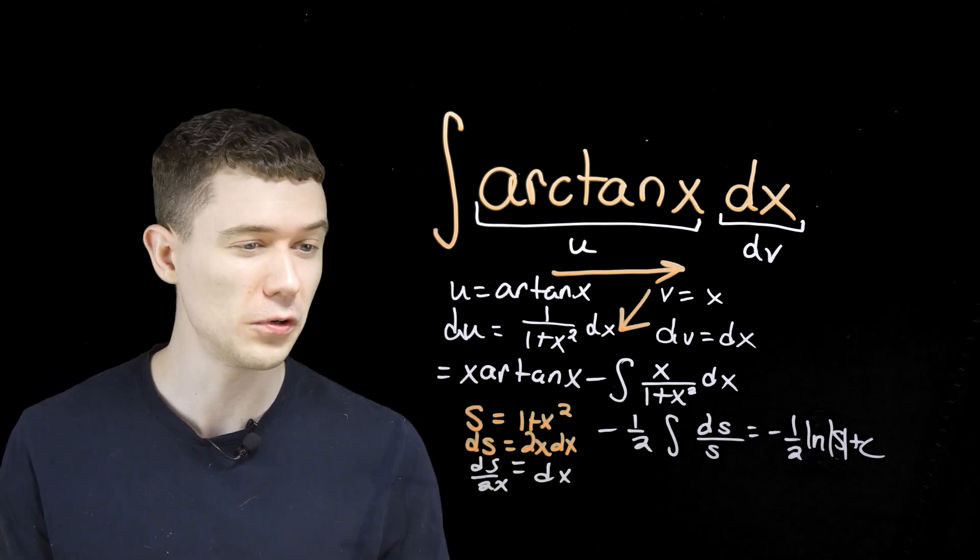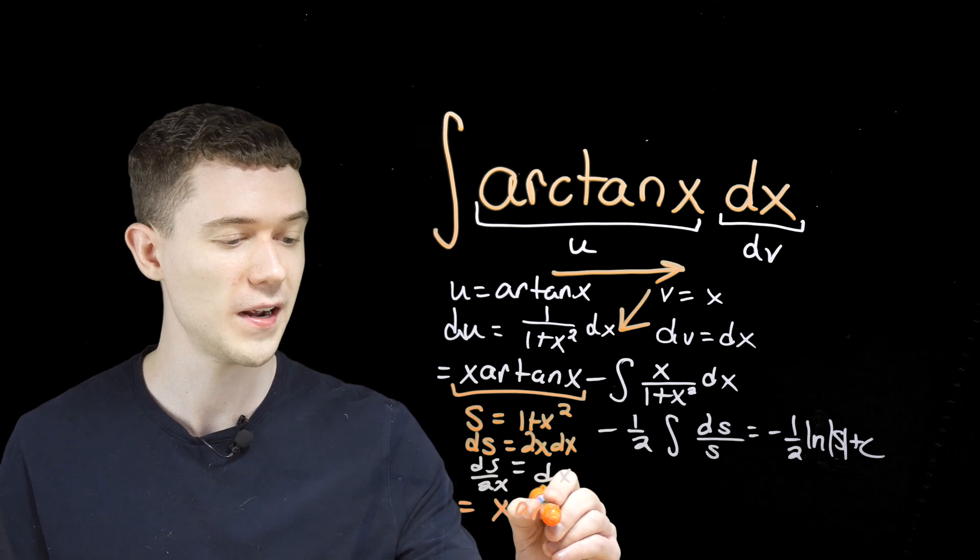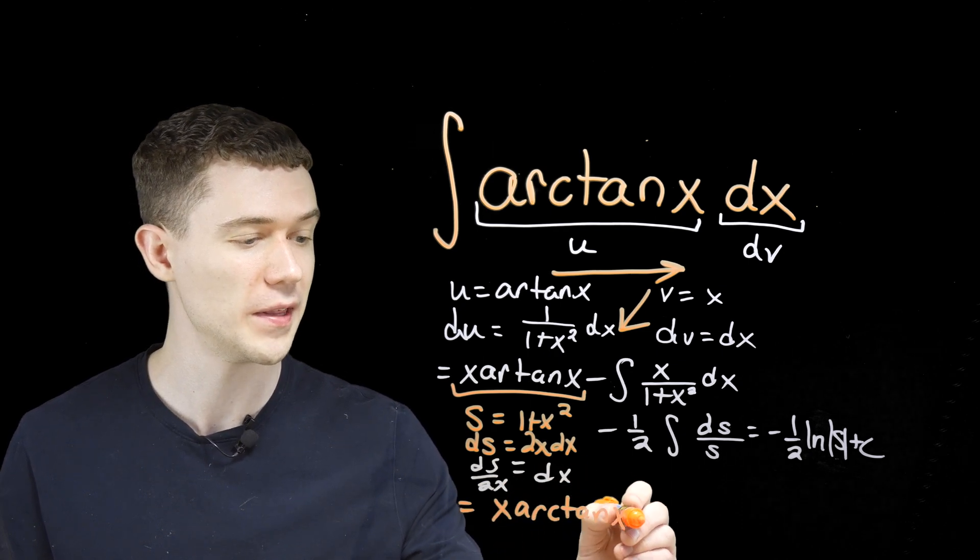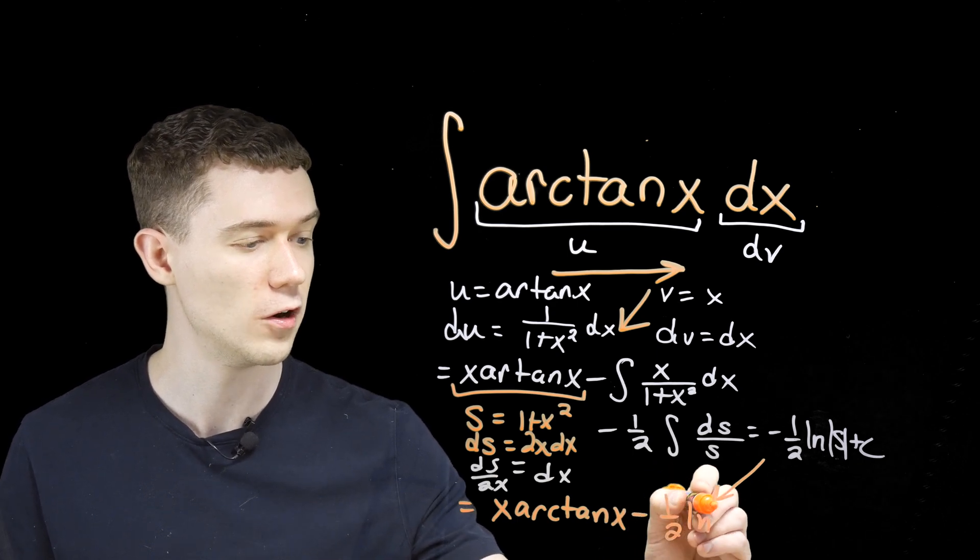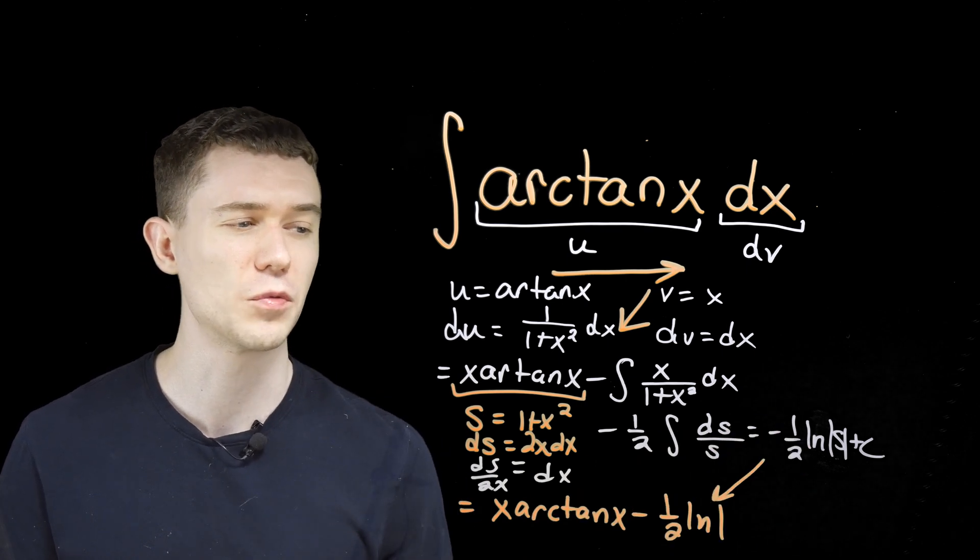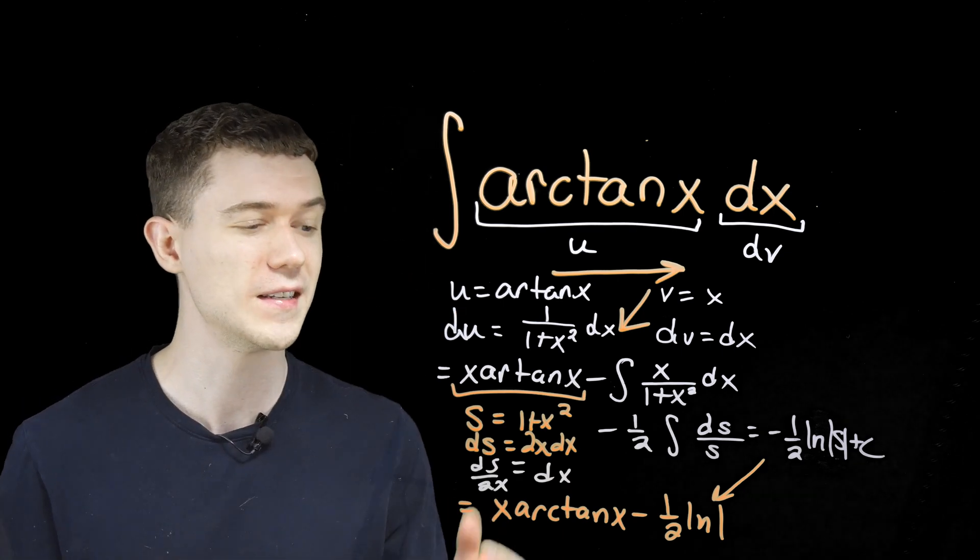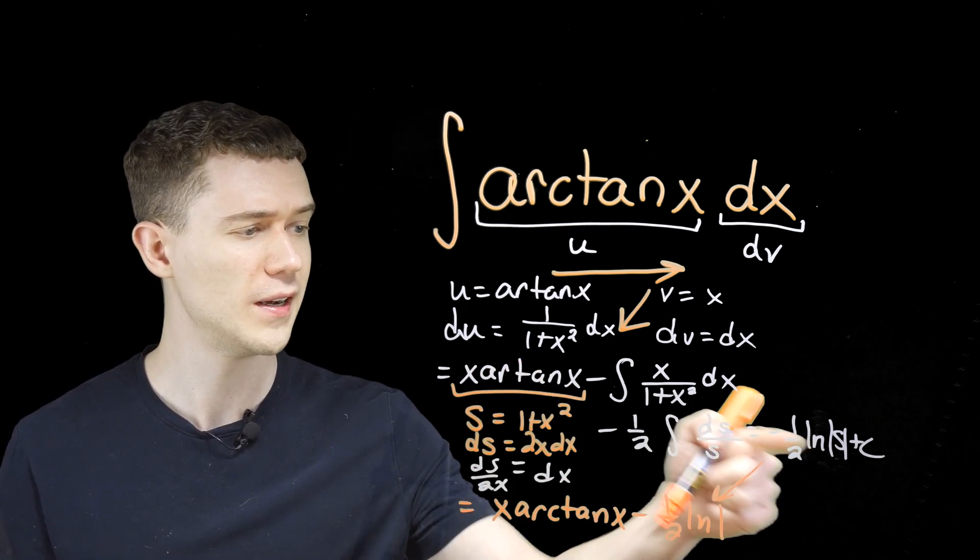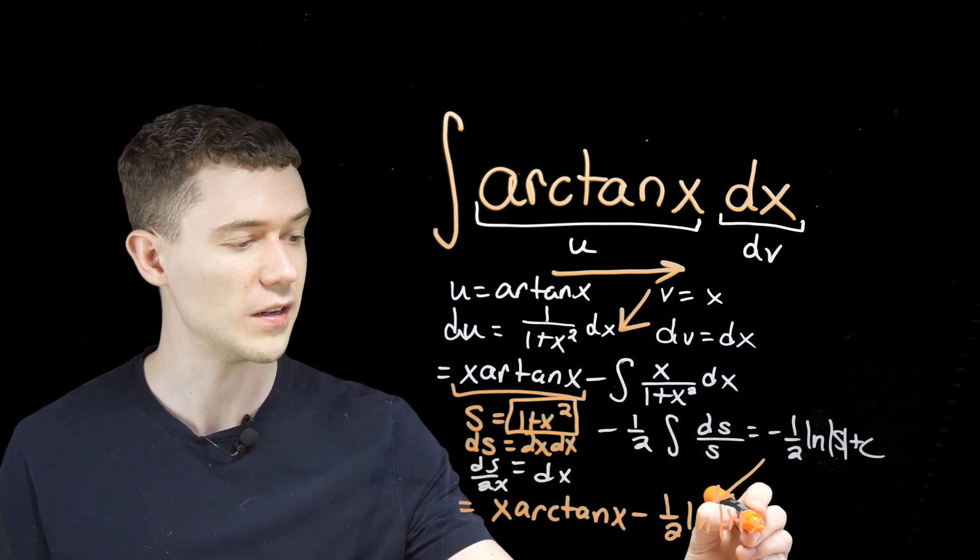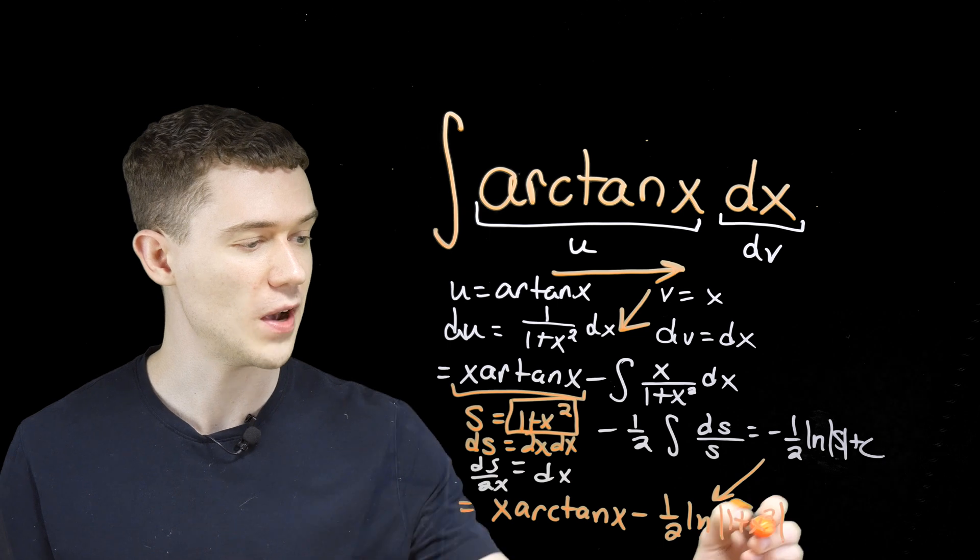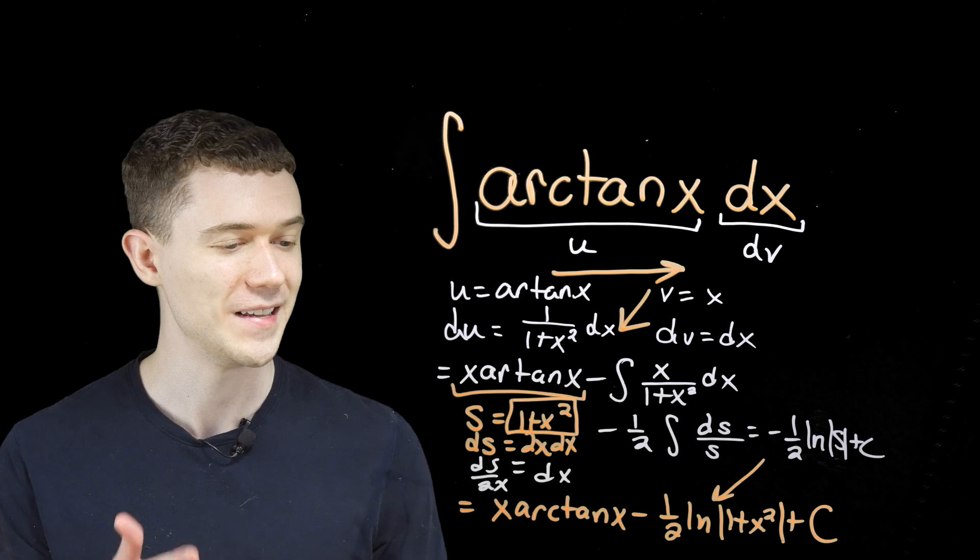So now we're ready to write the full answer. I still have this x arctan(x) out front here. x arctan(x). But then it was minus this integral here. It went a little bit all over the place, but I hope you'll forgive me. It's not natural log of s. We're not really interested in s here. We want our final answer to be in x's. We started with x's. We should end with x's. So what should s be? Well, we had s being 1 plus x squared here in absolute value. Every good indefinite integral deserves plus c, as I say. There's our answer.